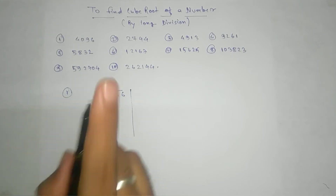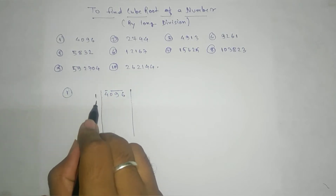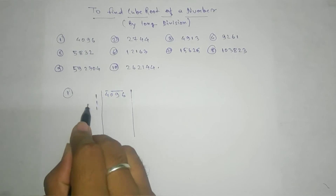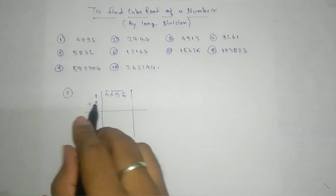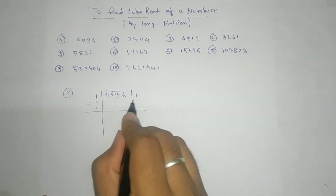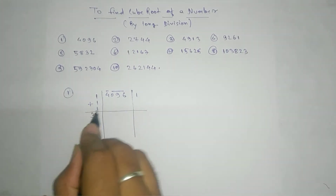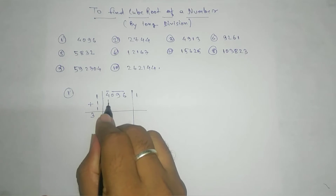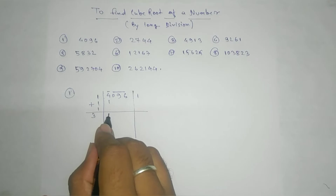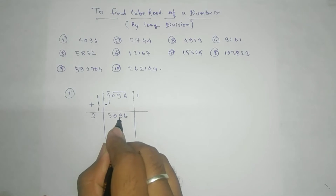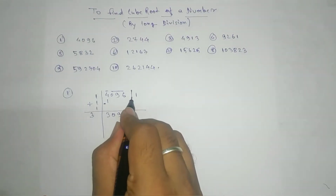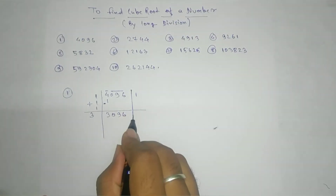The way we have taken square root two times, here we will take three times, and an addition rule will be there — we are going to add here. The same number we are going to take here, so three would come here: one, one here. One multiply here: one into one into one, we get one. So the result is one here. After subtracting we get 3096.